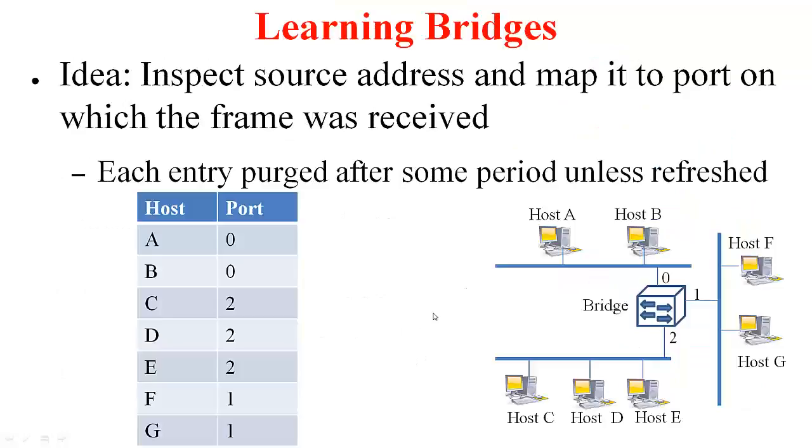So, here is the idea. It is a very simple idea, but a very clever idea. What you do is you inspect the source address of frames that are passing through you and map that particular address to the port on which the frame was received. For example, when host A sent a packet to host B, this packet is going to be received on this particular bridge on port 0. In which case, this bridge is now going to put an entry that says host A is on port 0. Note that you are looking at the source address here, not the destination address. So, to build the forwarding table, you are using the source address, but to forward a particular packet, you will use this table to forward the packet.